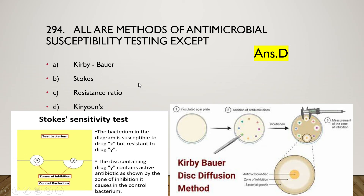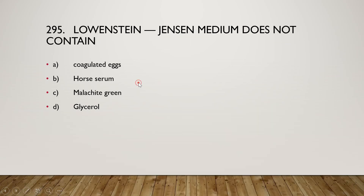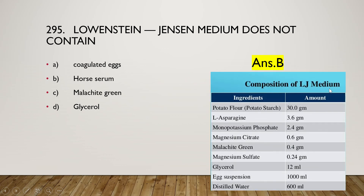The next question is: Lowenstein-Jensen medium does not contain (A) coagulated eggs, (B) horse serum, (C) malachite green, or (D) glycerol. The right answer is option B — horse serum is not present in Lowenstein-Jensen medium. The composition of the medium does not include horse serum.